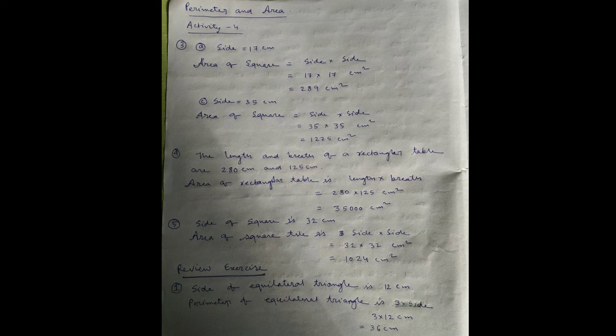Next number: side equal to 35 centimeter. Area of square equal to 35 into 35 centimeter square, equal to 1225 centimeter square. Number four: the length and breadth of a rectangular table are 280 centimeter...